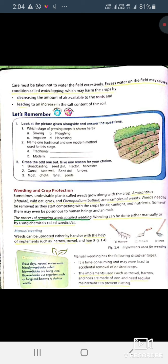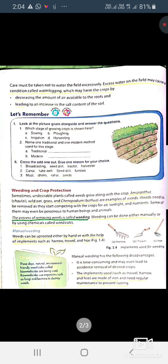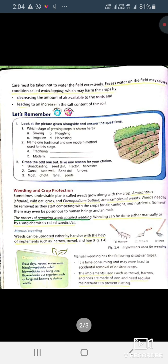The implements such as harrow, trowel, and hoe are made up of iron and that iron needs regular maintenance because it must be prevented from rusting.